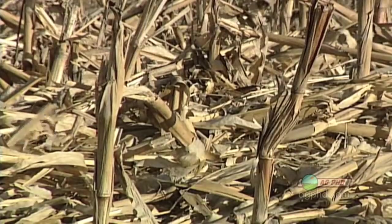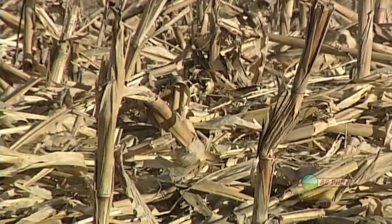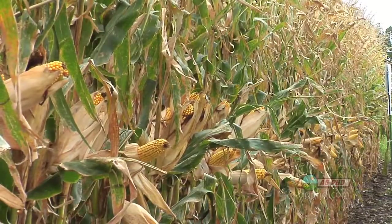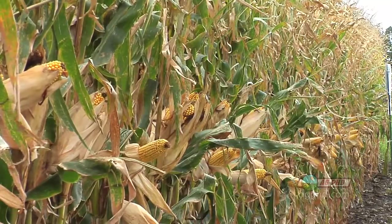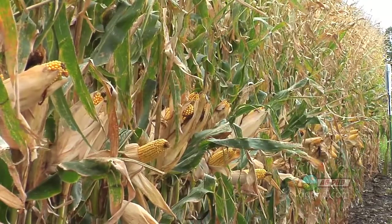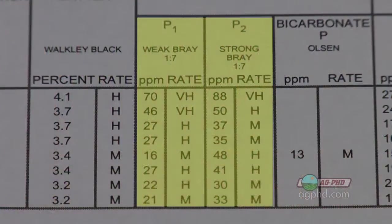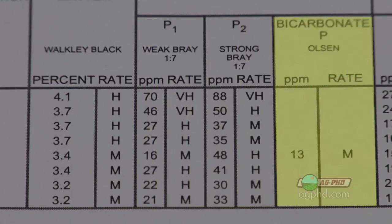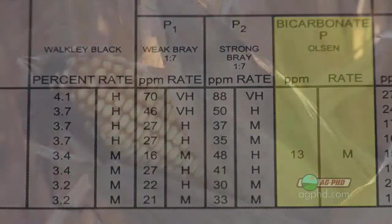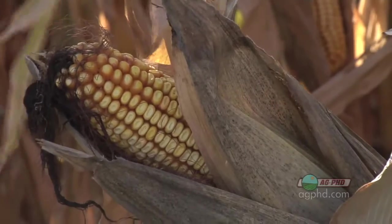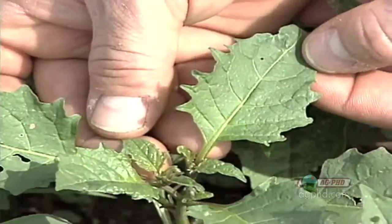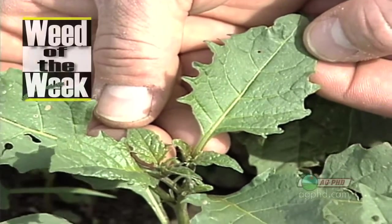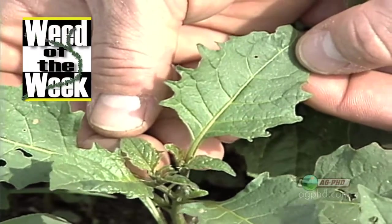Don't count on carryover from last year's crop. Look at your soil test and figure out what this year's crop needs — that's how you'll know where you're at for phosphorus in your fields. Use the Bray test when soil pH is below 7, and the Olsen test when pH is above 7. The Olsen test will tell you available phosphorus for this year's crop, but it won't tell you how to control this week's Weed of the Week — we'll show you how coming up next.